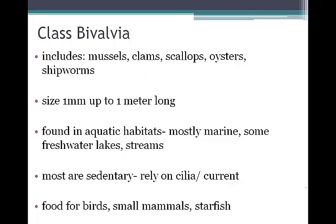Our second class is Bivalvia, which includes mussels, clams, scallops, oysters, and shipworms. These tend to be slightly smaller, sizing from one millimeter up to one meter long. They're found in aquatic habitats, mostly marine, though some can be found in fresh water. Most are sedentary and rely on cilia and currents to move. These molluscs serve as food for birds, small mammals, and starfish.